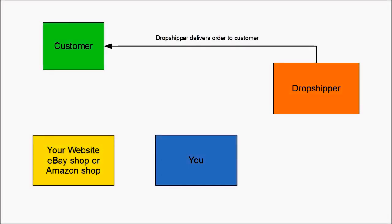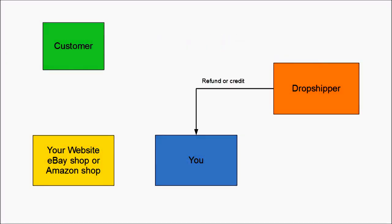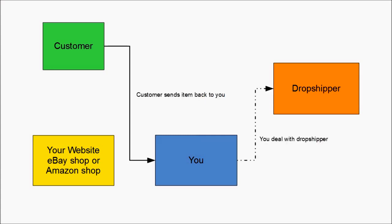Depending on the drop shipper, you may have to pay them upfront, or you may be able to have an account and they'll invoice you and you pay them at an agreed time — it varies from drop shipper to drop shipper. The drop shipper will deliver the order directly to your customer, so you don't actually handle any of the merchandise. Some drop shippers also handle the returns, and the drop shipper might issue you a refund or it might just be a credit against future purchases. Others require the customer to send the item back to you, and you refund the customer and then take it up with the drop shipper.